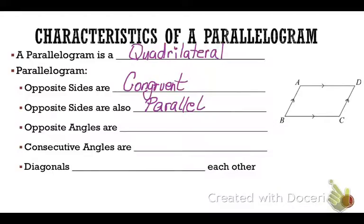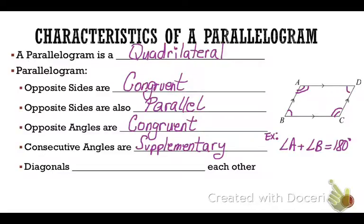Opposite angles of a parallelogram are also congruent. So in our diagram, angle A is congruent to angle C, and angle B is congruent to angle D. Consecutive angles — meaning two angles right next to each other — are supplementary. So if you add angle A and angle B, you get 180 degrees. The same is true for angles A and D, D and C, and B and C.